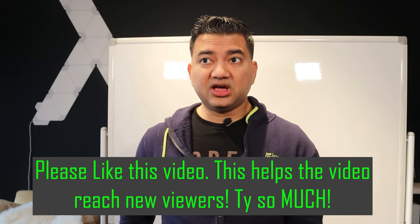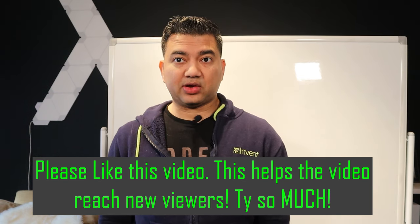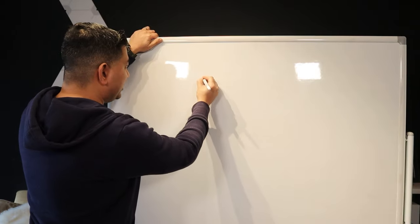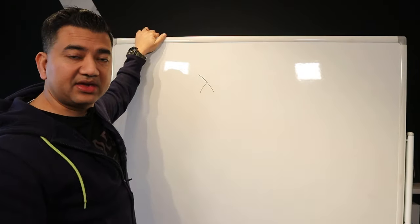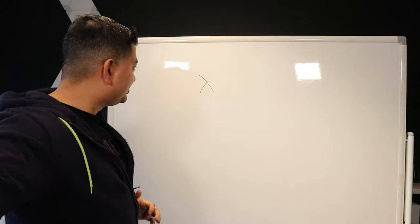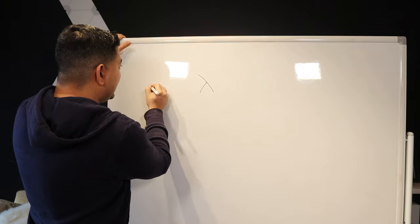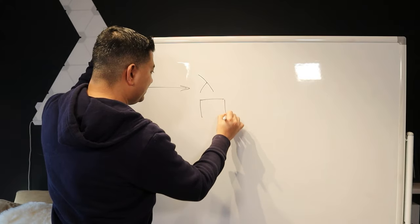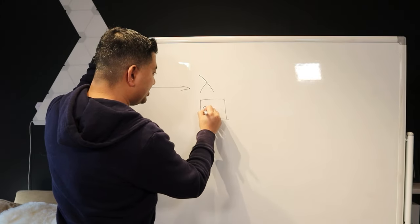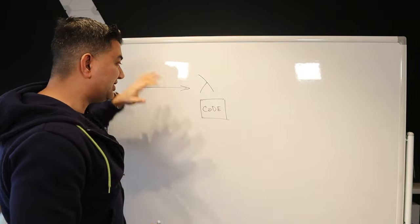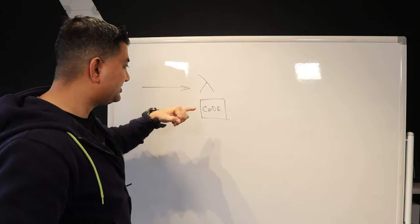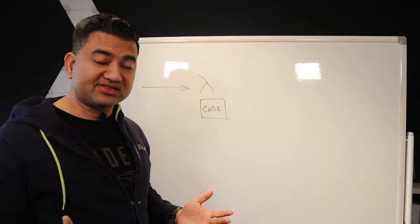Question number three, which is very common: how to handle Lambda cold starts. First, let's understand what a cold start is. By default, when you define your Lambda, your code is just sitting there but no code is running yet. When an invocation comes, a container spins up under the hood and then loads your code and starts running. The time it takes between your Lambda getting invoked and the code actually starting to run is termed a cold start.